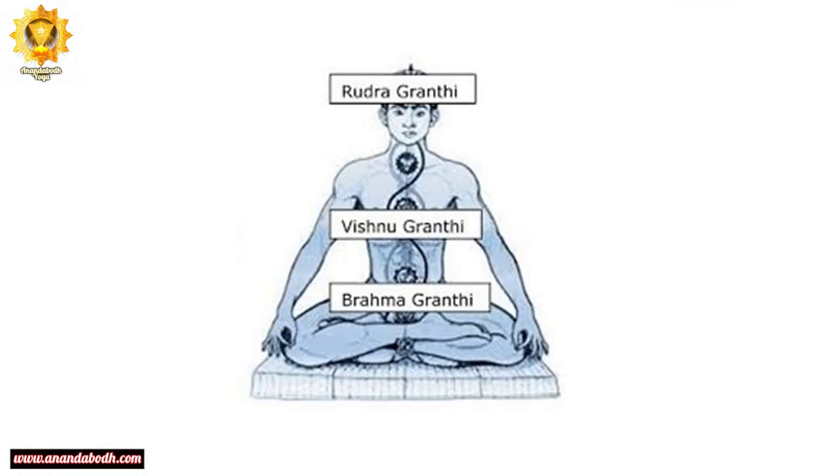These obstacles and obstructions are called Granthis — psychic knots. At three points there are three Granthis: namely Brahma Granthi, Vishnu Granthi, and Rudra Granthi. So there are three psychic knots in our Sushumna pathway which obstruct the flow of Prana, and this is very common in all of us — in the human body. So many billions of population, but our energy remains blocked; it doesn't move upward. It remains at one place, dormant. These are the locks which are obstructions in the flow of Prana along the Sushumna Nadi.